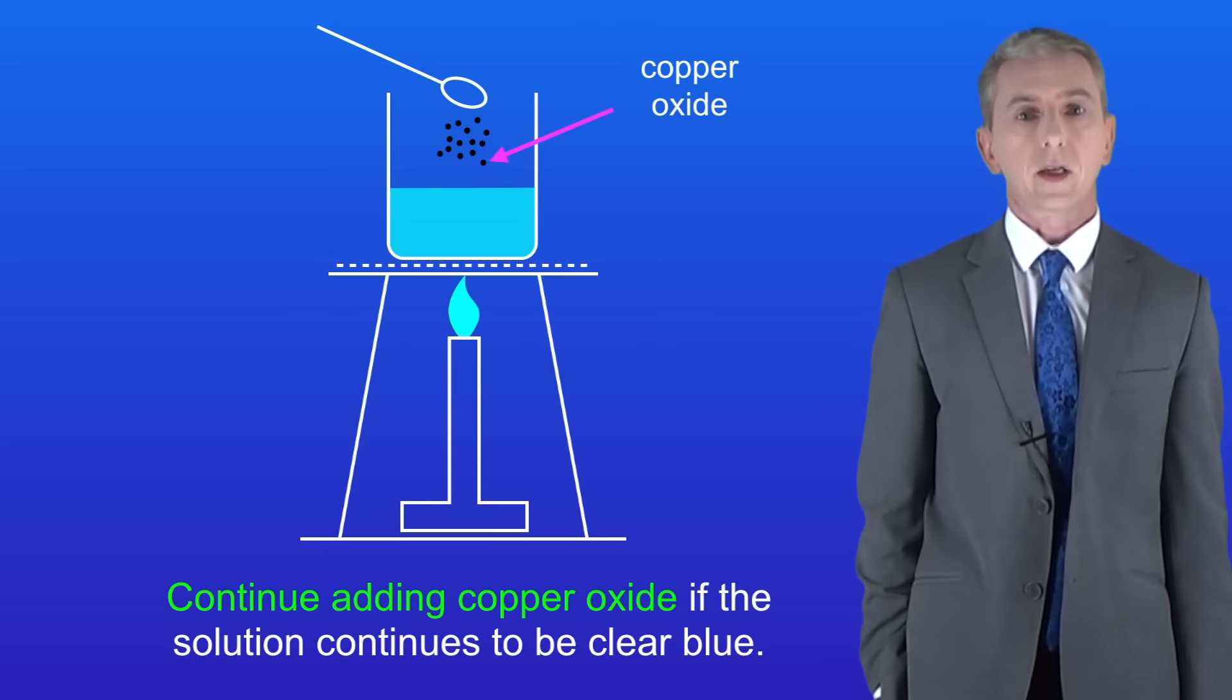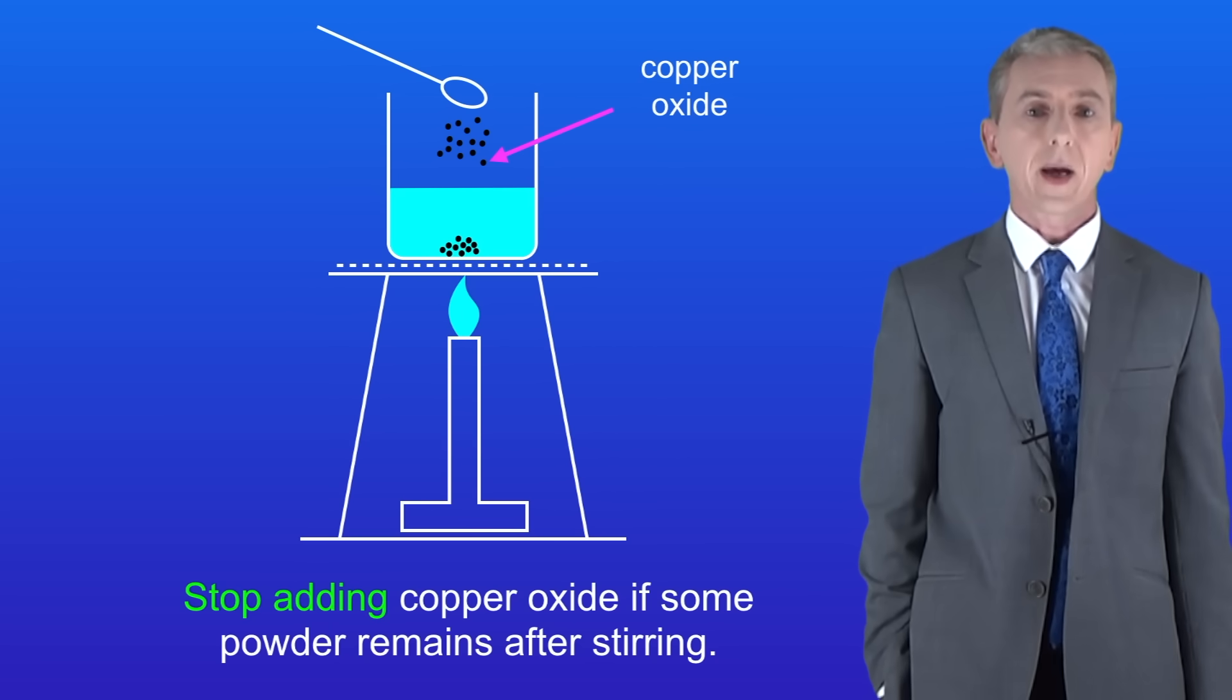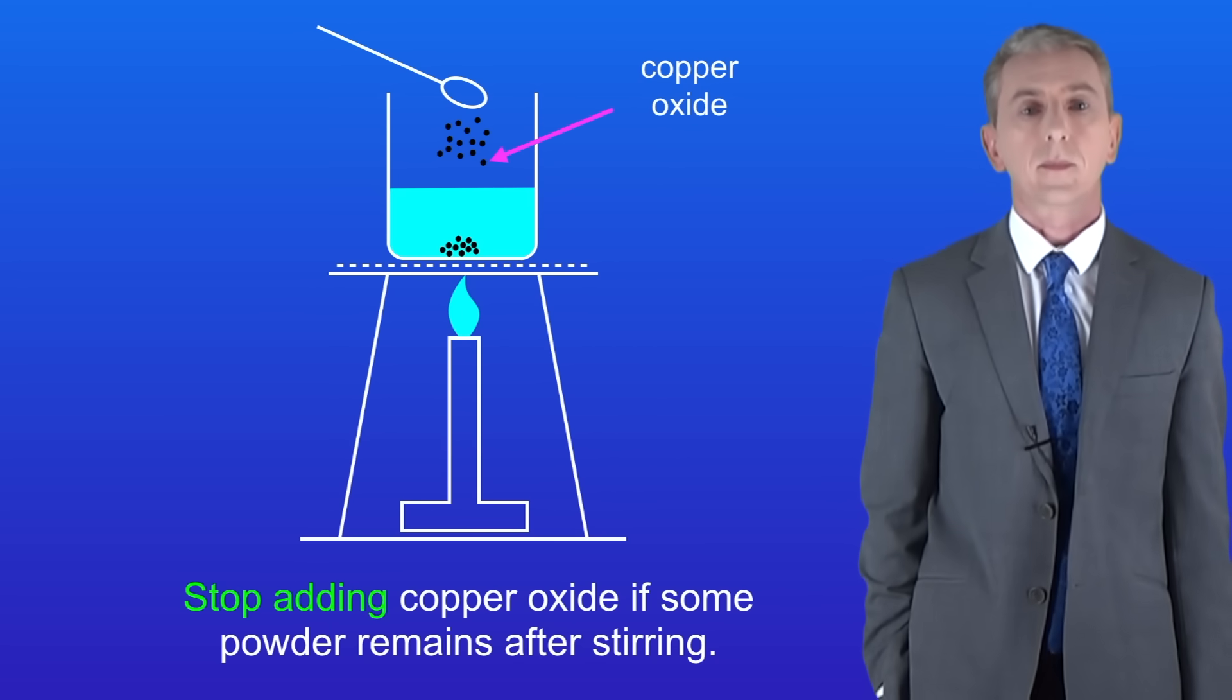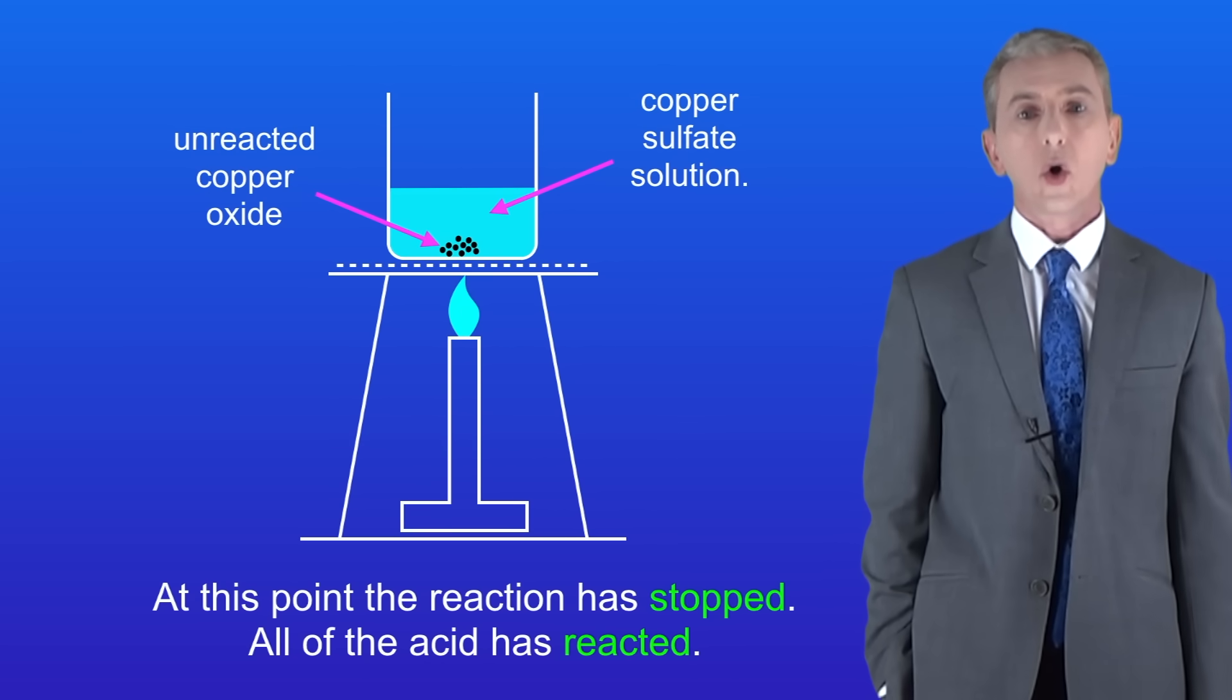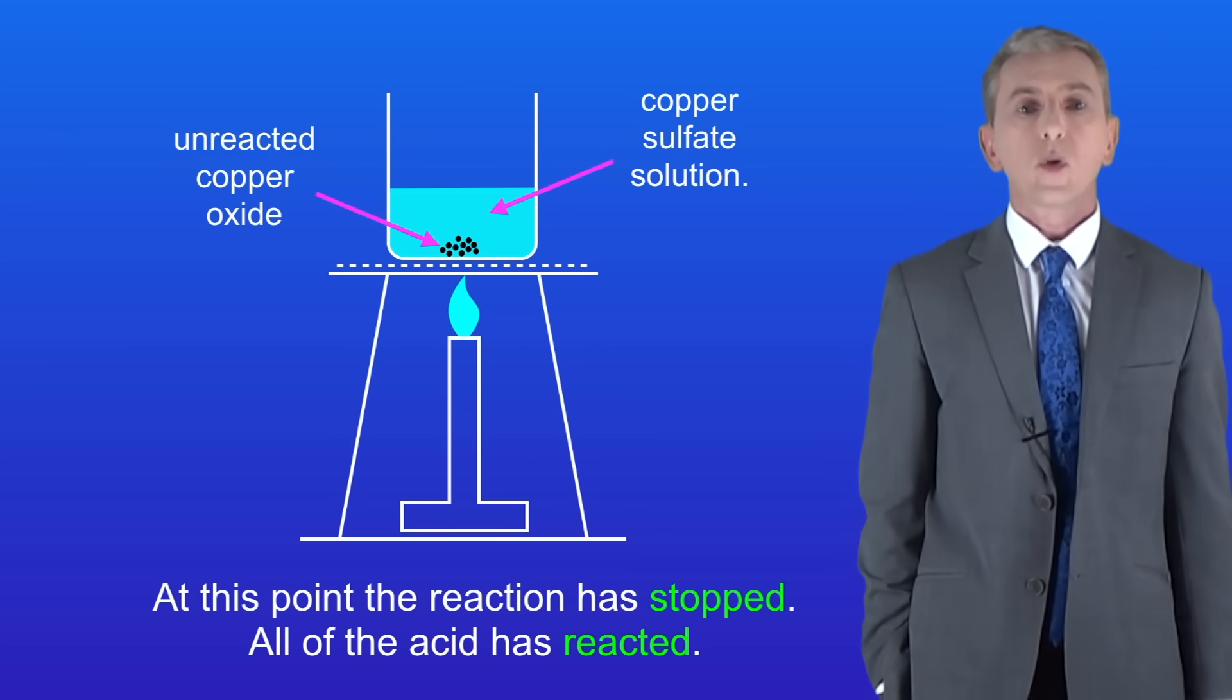Continue adding copper oxide if the solution continues to be clear blue. Stop adding copper oxide if some powder remains after stirring. Now at this point the reaction has stopped as all of the acid has reacted. We've made copper sulphate and the solution is now neutral.